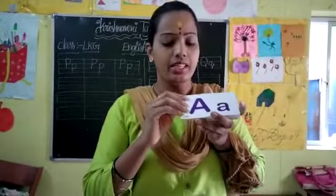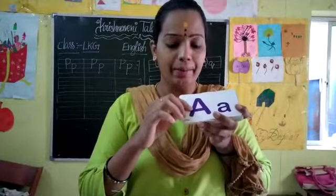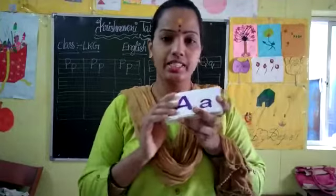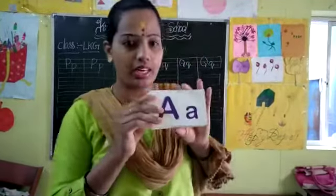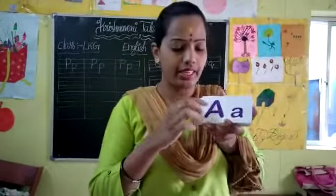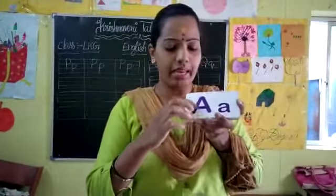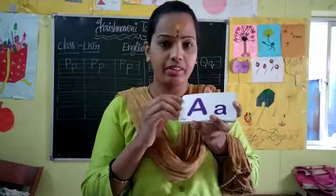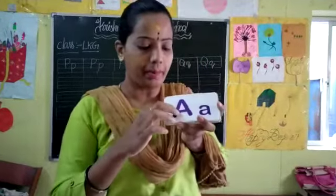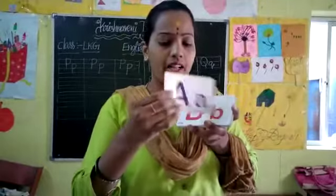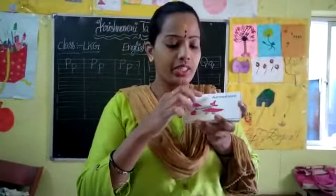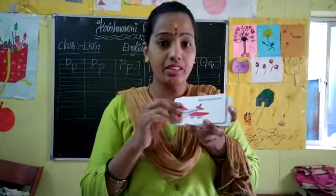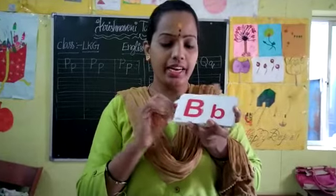What is this? This is the letter A — capital A and small a. Yes children, say here uppercase letters and lowercase letters also. Capital A, small a. Say everyone after me: capital A, small a. And the object is A for aeroplane. Very good.